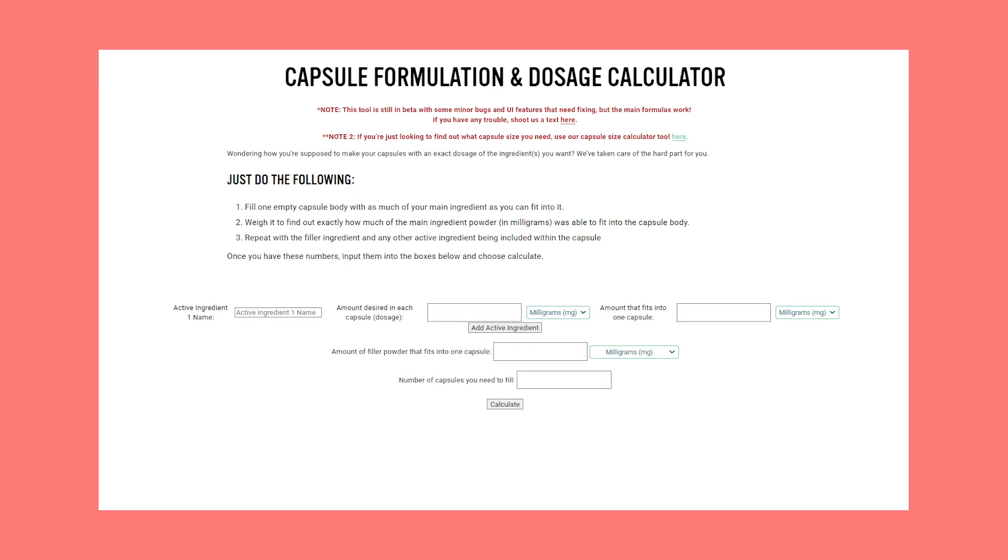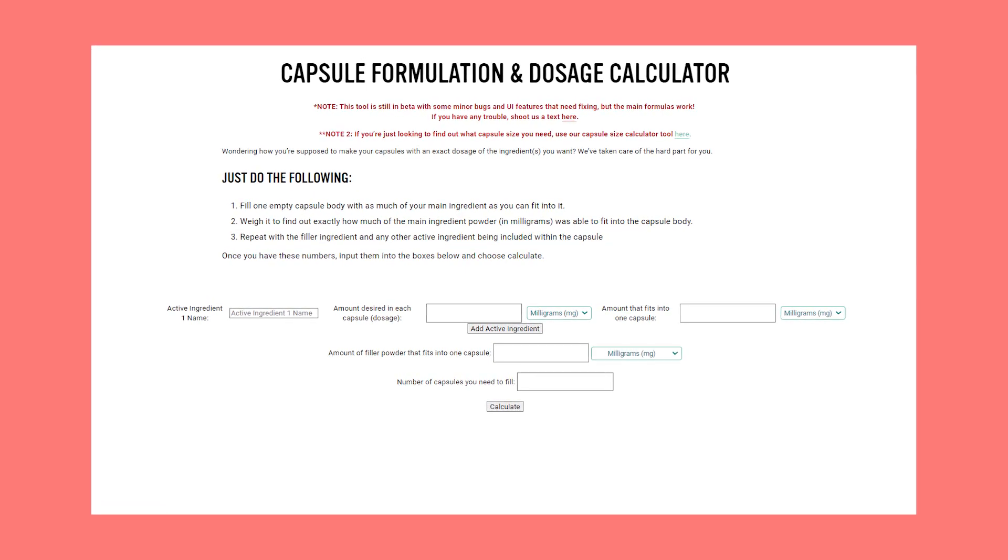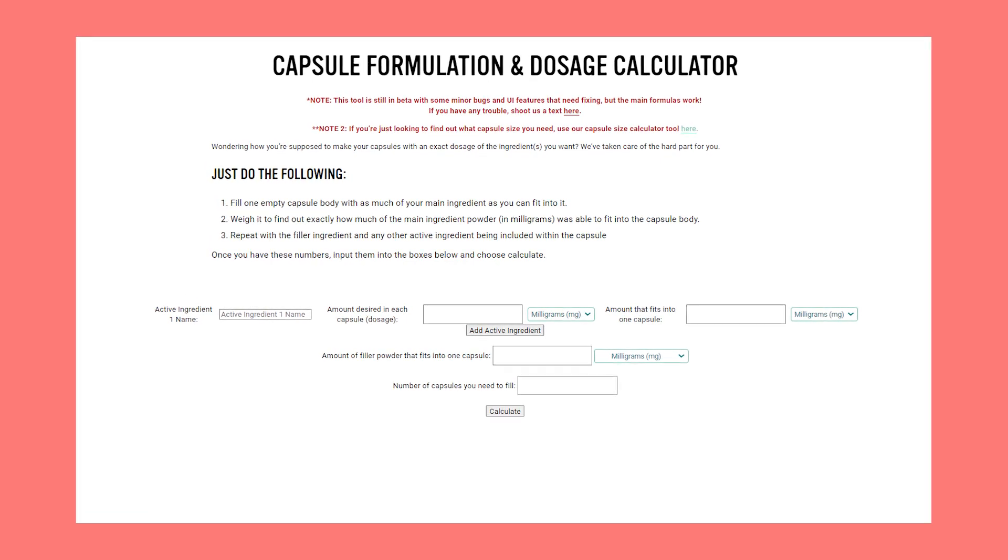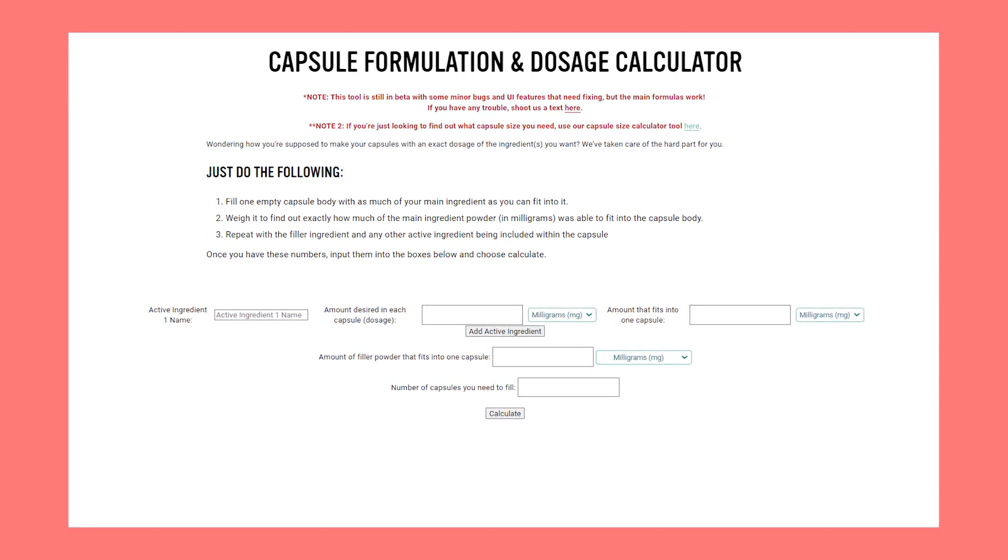This calculator does all the hard work for you. You just need to choose a filler powder you like and a capsule size that will hold more than the dose you need. Then follow the directions provided.